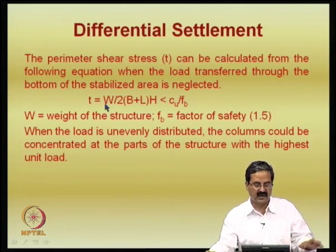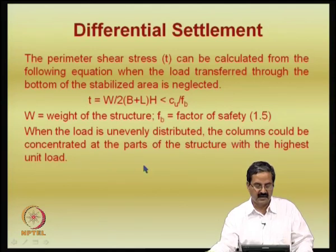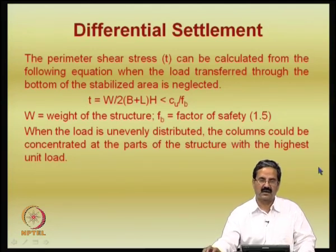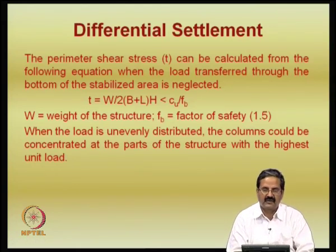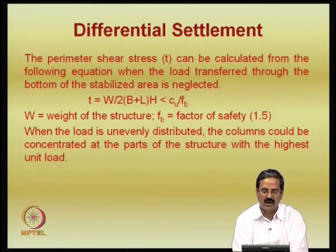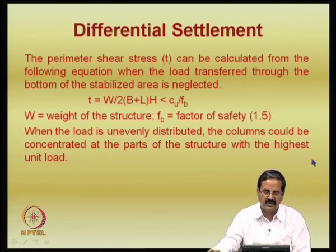The perimeter shear stress can be calculated from the equation when the load transferred through the bottom of the slab is neglected. Once you know the weight of the structure, one can calculate the factor of safety. When the load is unevenly distributed, the columns could be considered at the parts of the structure with the highest load. For an embankment, you just add all loads, put the columns in with proper spacing, and it is completely done.